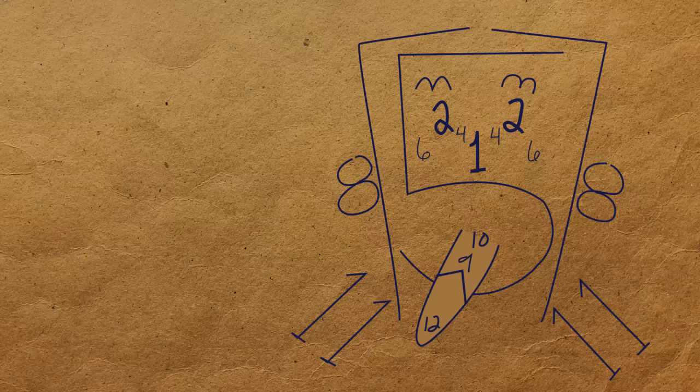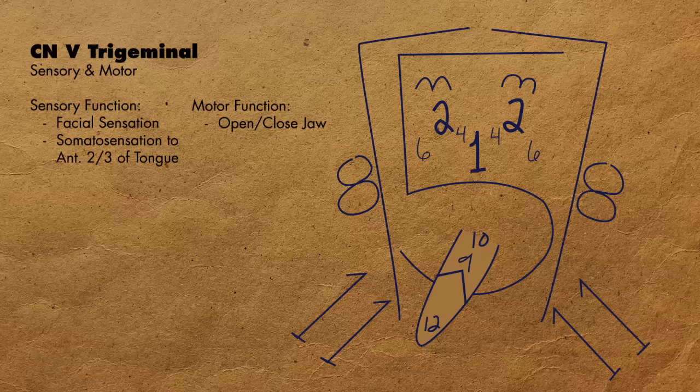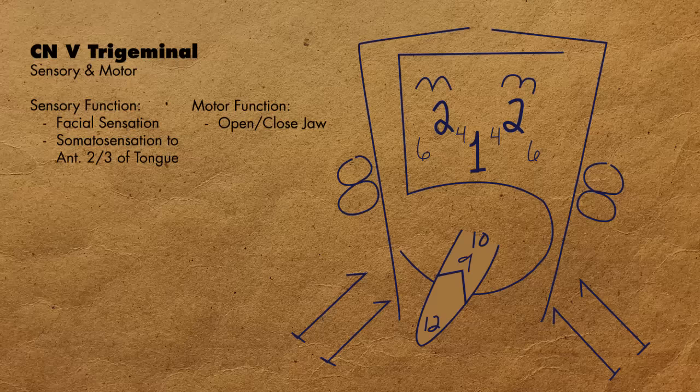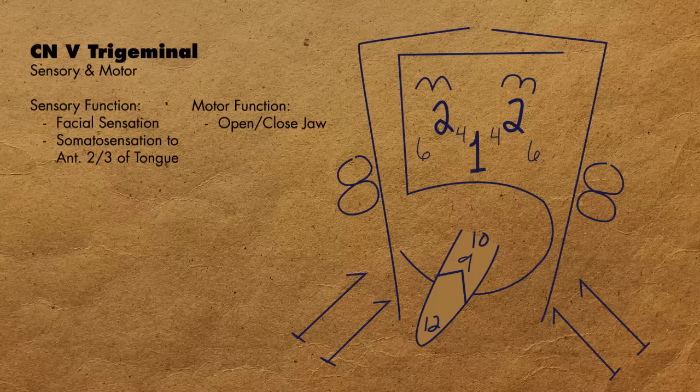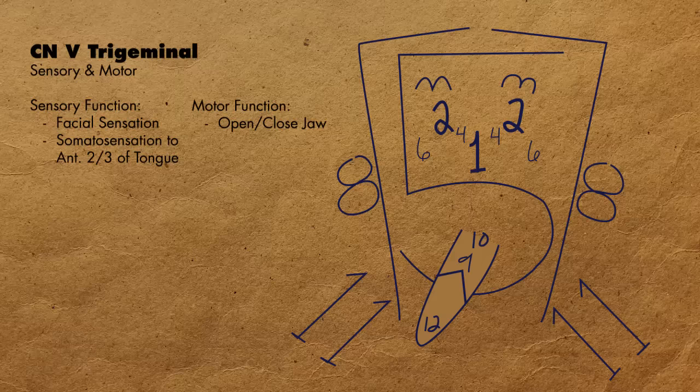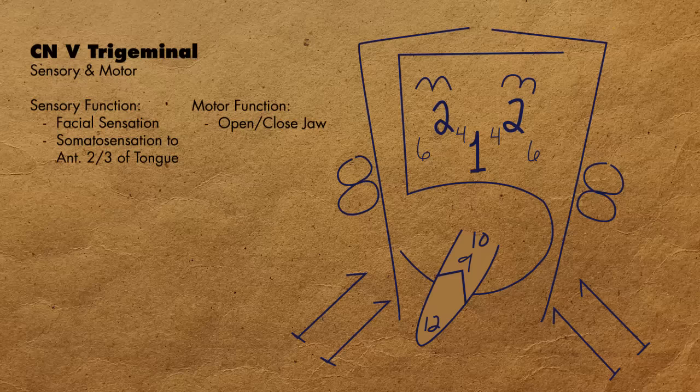Cranial nerve 5, the trigeminal nerve, is our first sensory and motor nerve. And by looking at our drawing, you could guess that it has something to do with the face. And of course you're right, cranial nerve 5 is responsible for facial sensation, or what you feel on your face, like pain, or soft touch. You could also include the anterior two-thirds of the tongue in this area that cranial nerve 5 innervates as its sensory component. In regards to the motor component of cranial nerve 5, it innervates your muscles of mastication, and so it helps you open and close your jaw and aids in chewing your food.